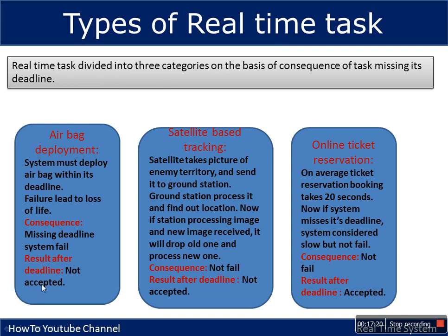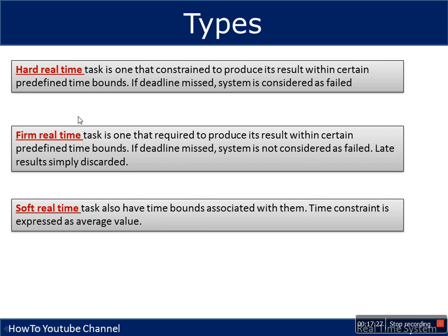These three examples define the three types of real-time systems, categorized based on consequences of missing a deadline and whether late results are accepted. Hard real-time systems require that deadlines are never missed — missing a deadline means system failure and late results are not accepted, as with airbag deployment. Firm real-time systems: the system is not considered failed if a deadline is missed, but late results are simply discarded, as with satellite tracking. Soft real-time systems: missing a deadline is acceptable and late results are still accepted, as with online ticket reservation.